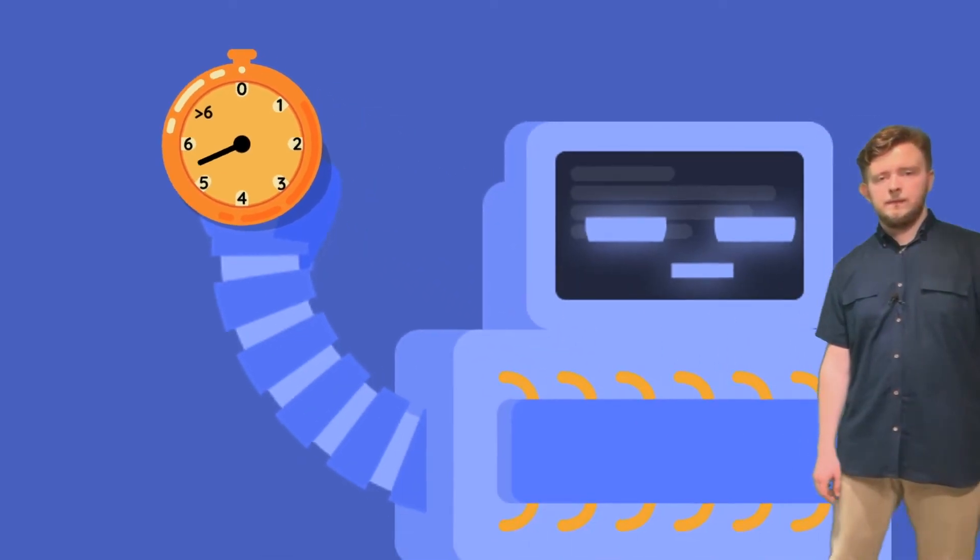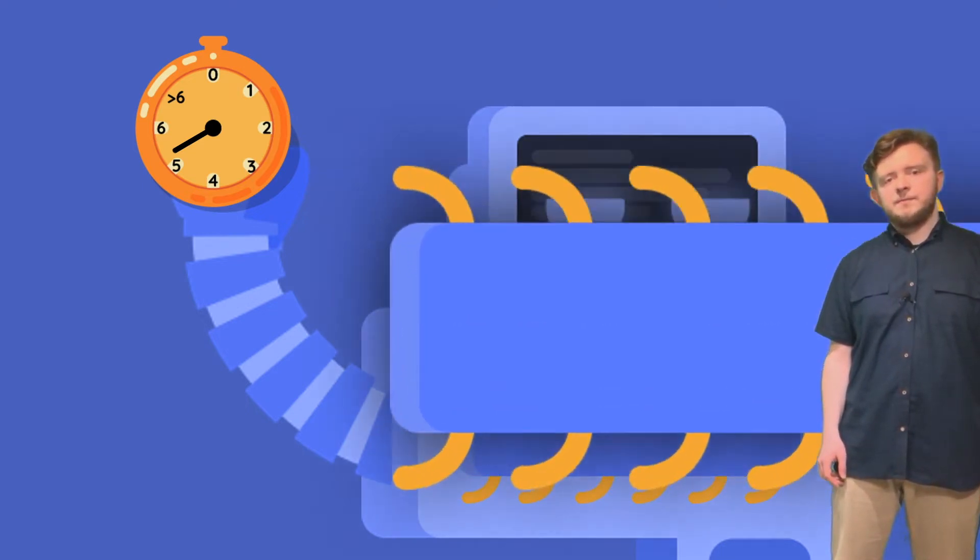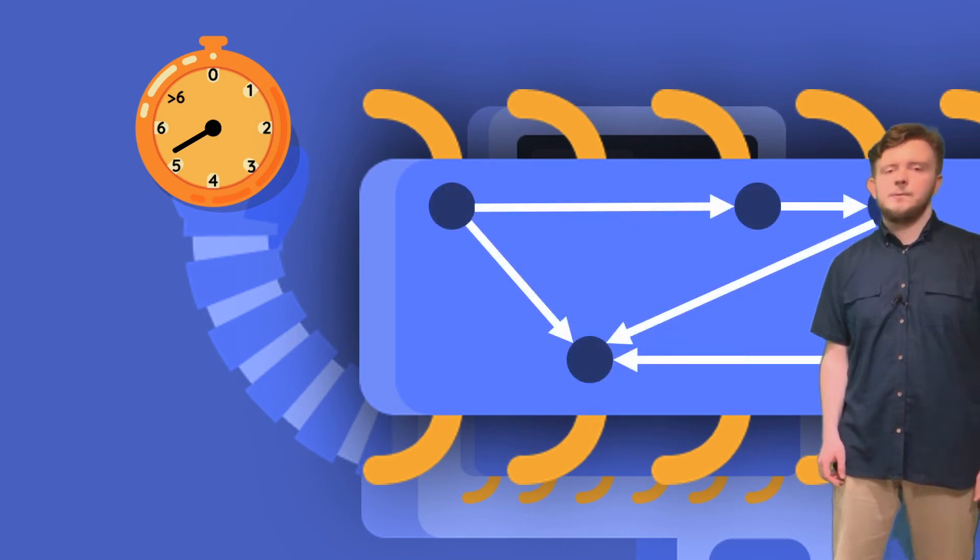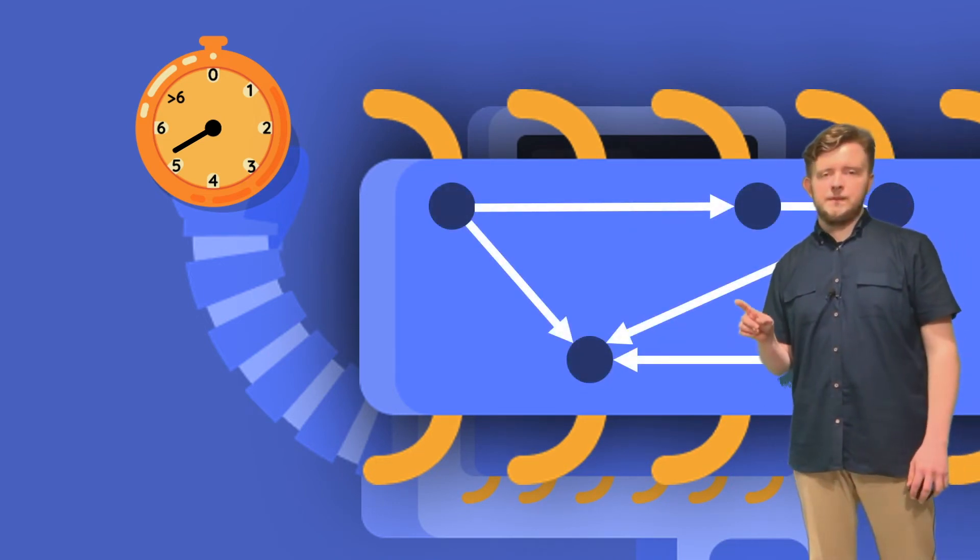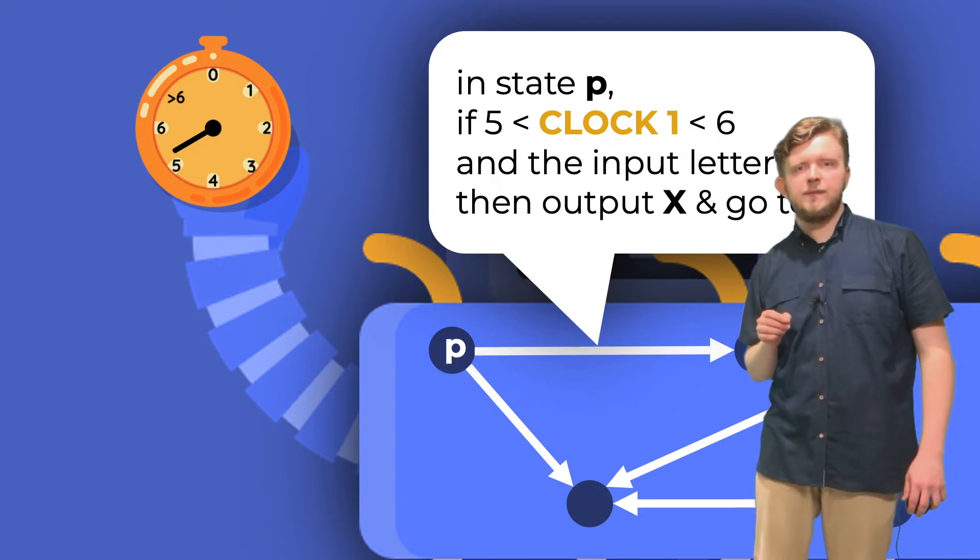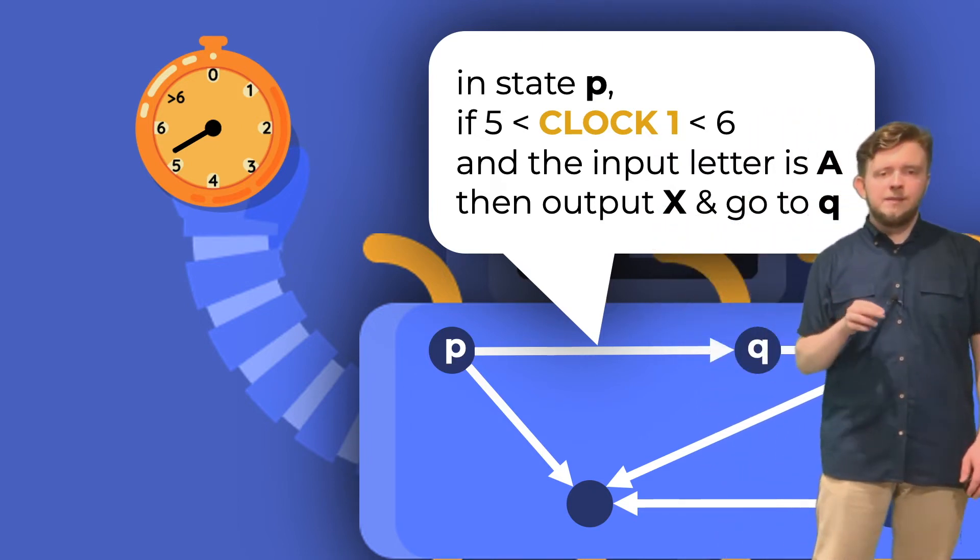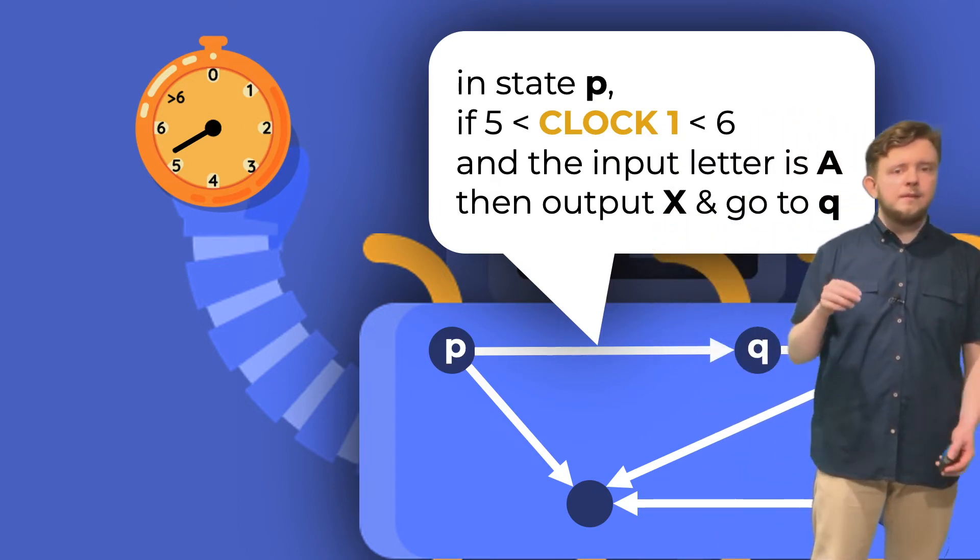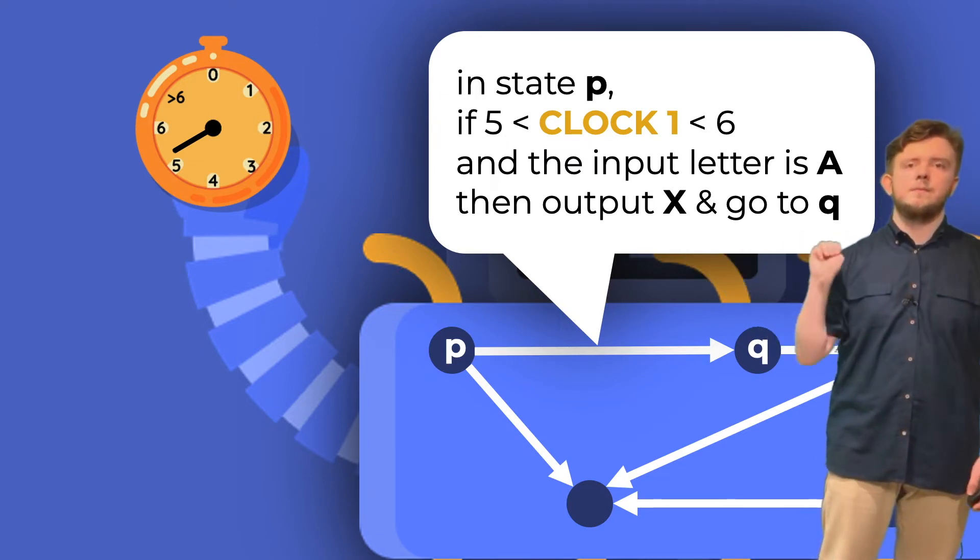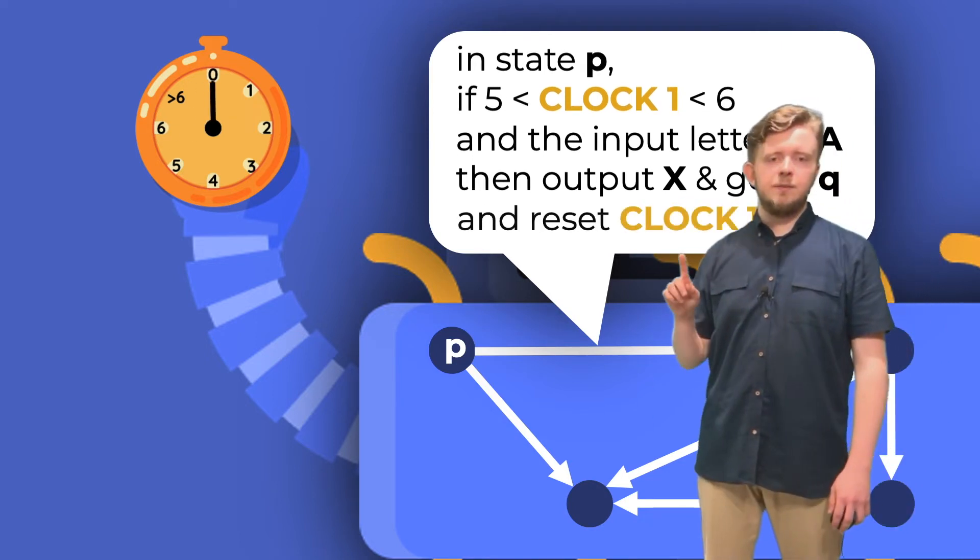How can the readings from the clock be used by the controller? The controller has its strategy here. It is a simple graph of states with transitions between them. Now, the controller may use different type of transitions, that is timed transitions. A timed transition, for example, may say the following. If you are in the state P, and your clock shows something between 5 and 6, and additionally the input you have observed is A, then you can output X and go to the state Q. Additionally, a timed transition might also decide to reset a clock, that is, set its value back to 0.